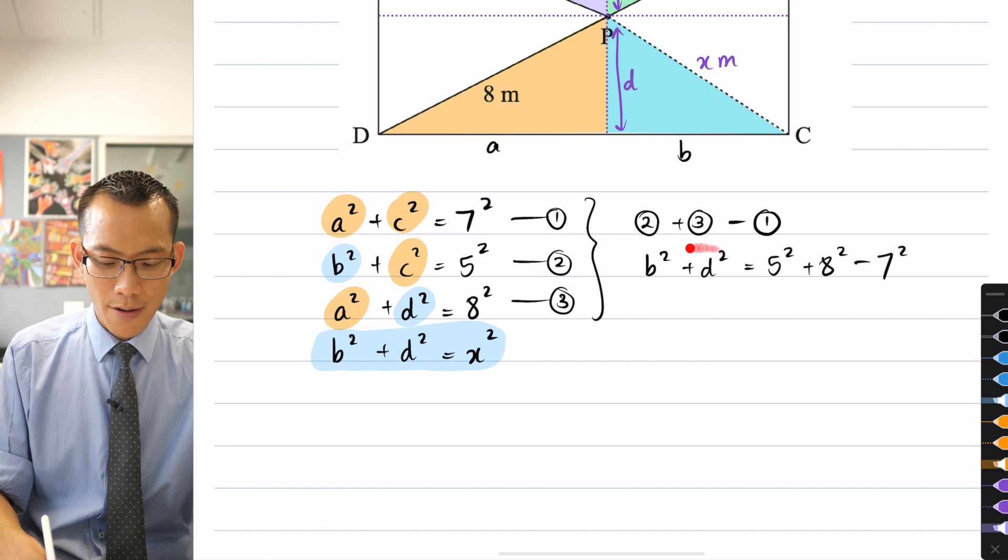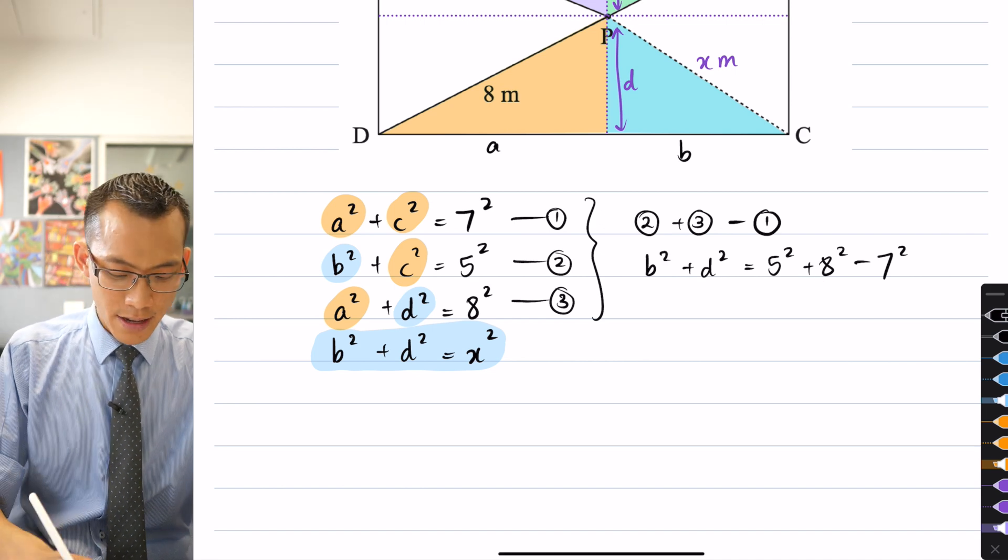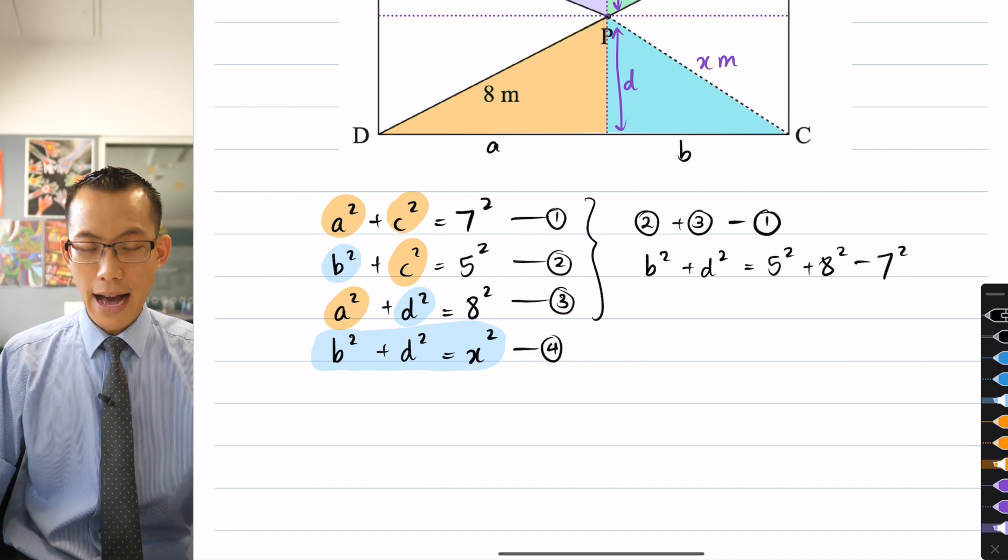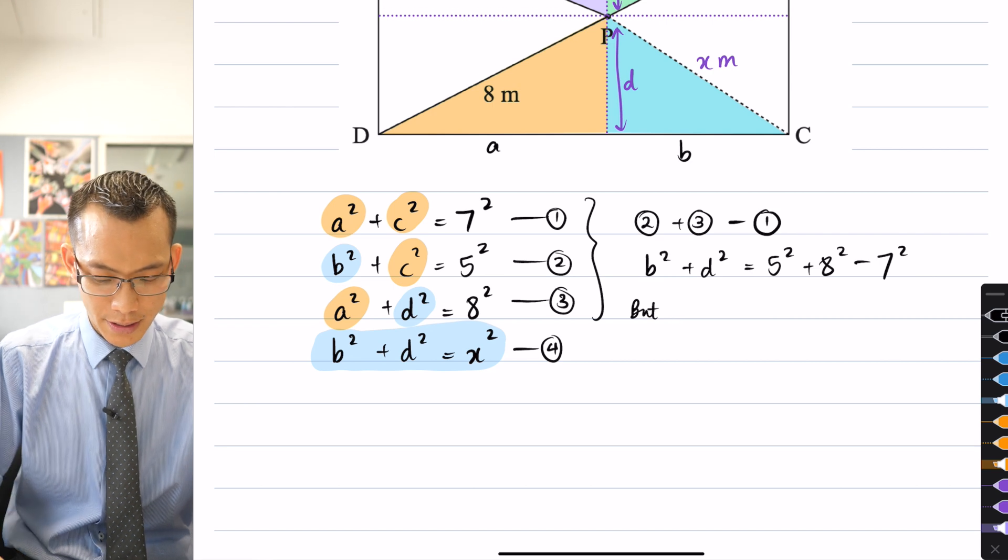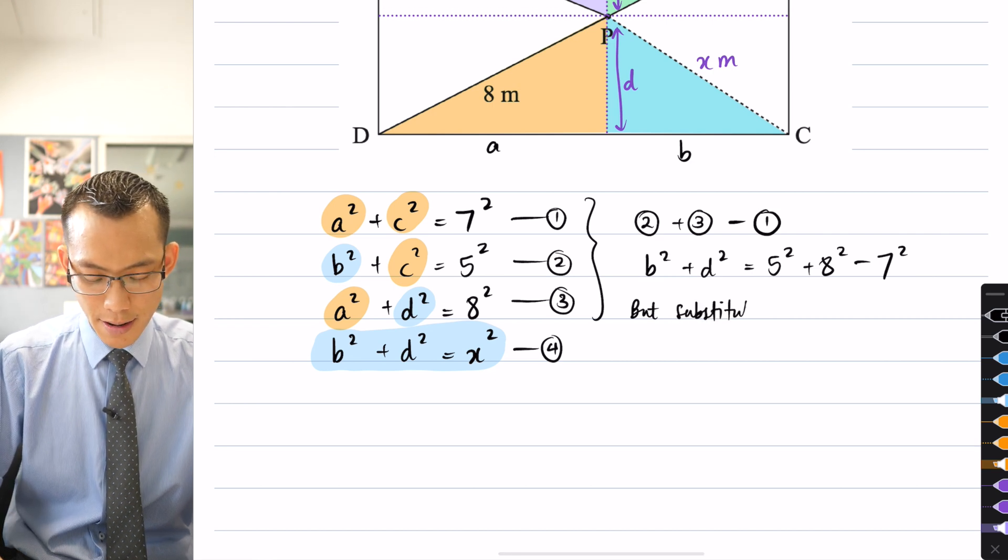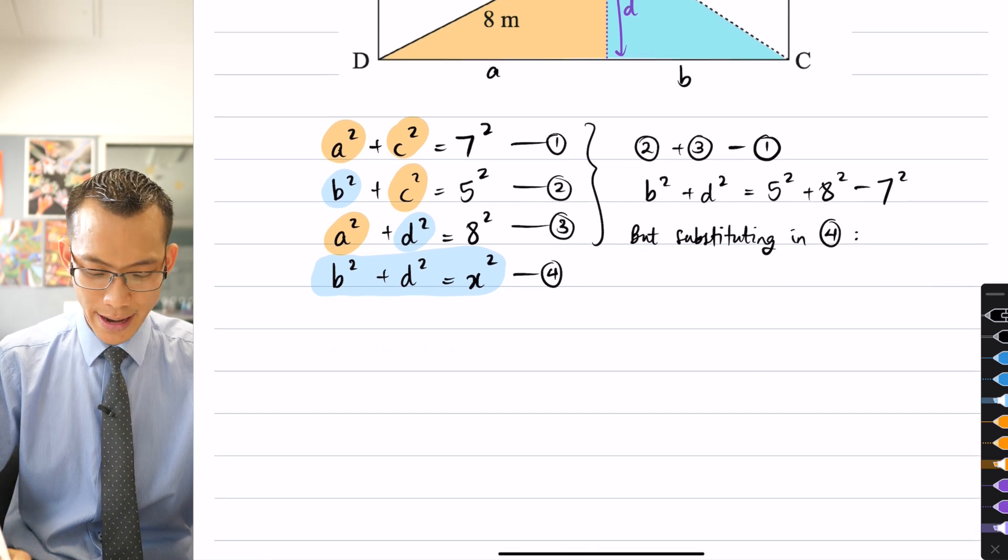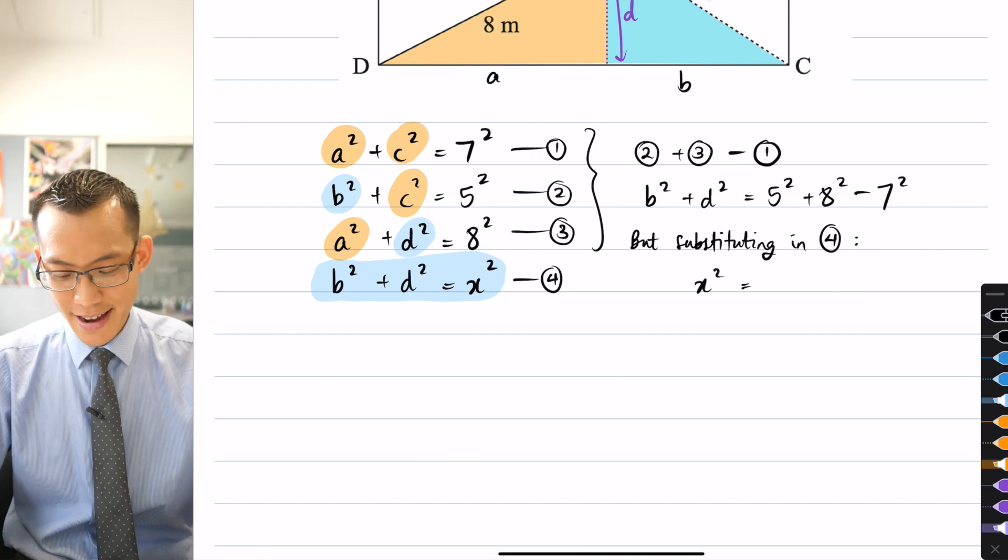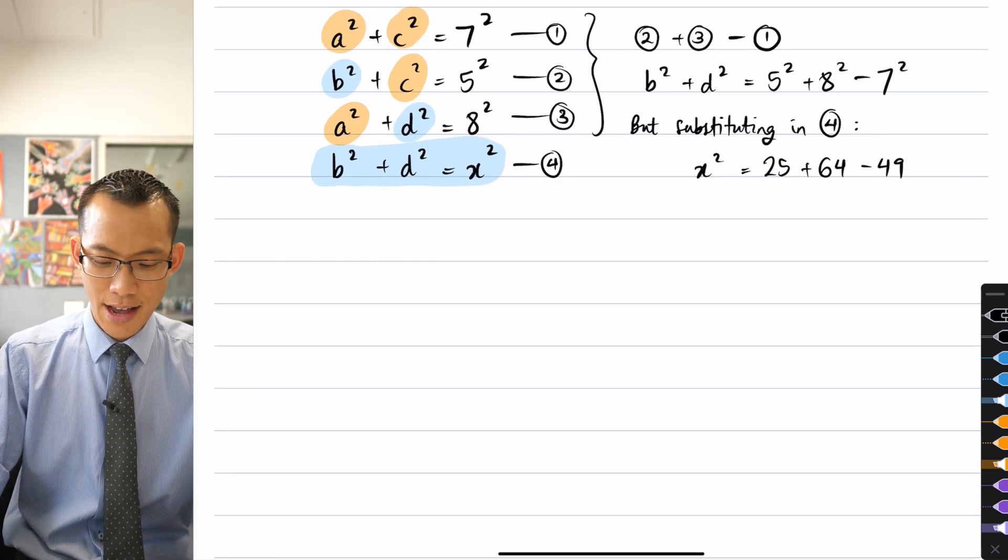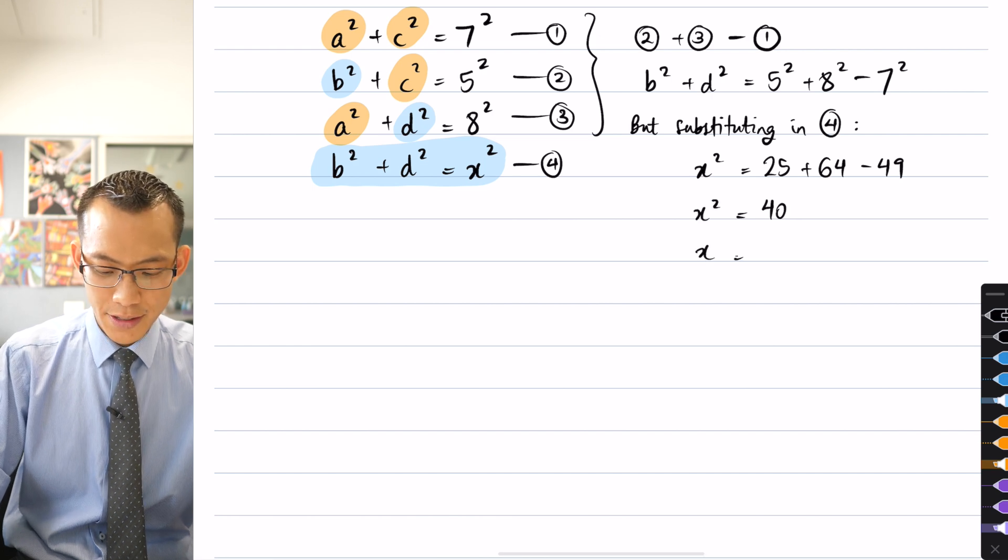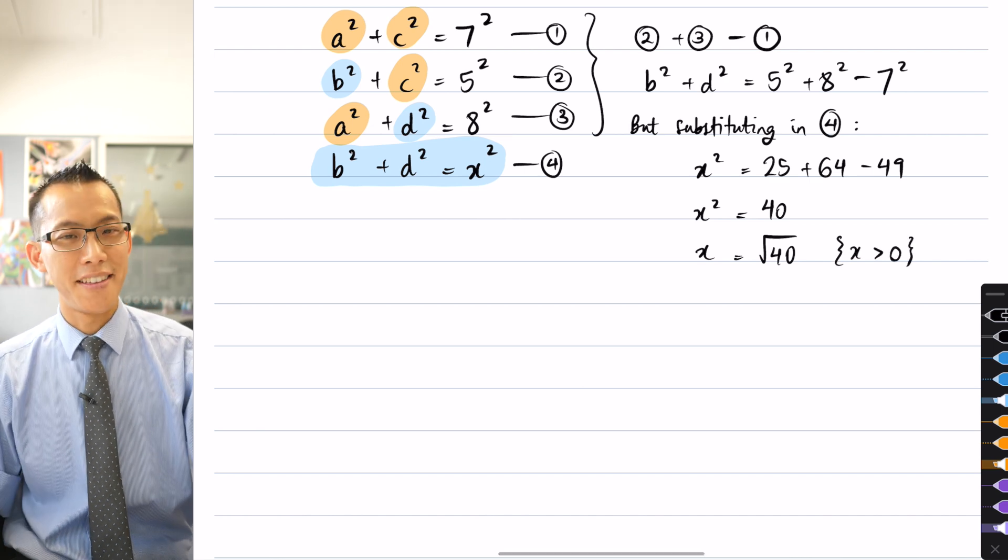So I subtracted, or rather I've added and subtracted everything on the left, I've added and subtracted everything on the right. But then I can say if I call this equation 4, I can substitute that B² + D² for X². So that's going to give me X² on the left hand side, that gives me 25 + 64 - 49. And the last time I checked that was equal to 40. So therefore, X is going to be the square root of 40 because X is a length. So I disregard the negative.